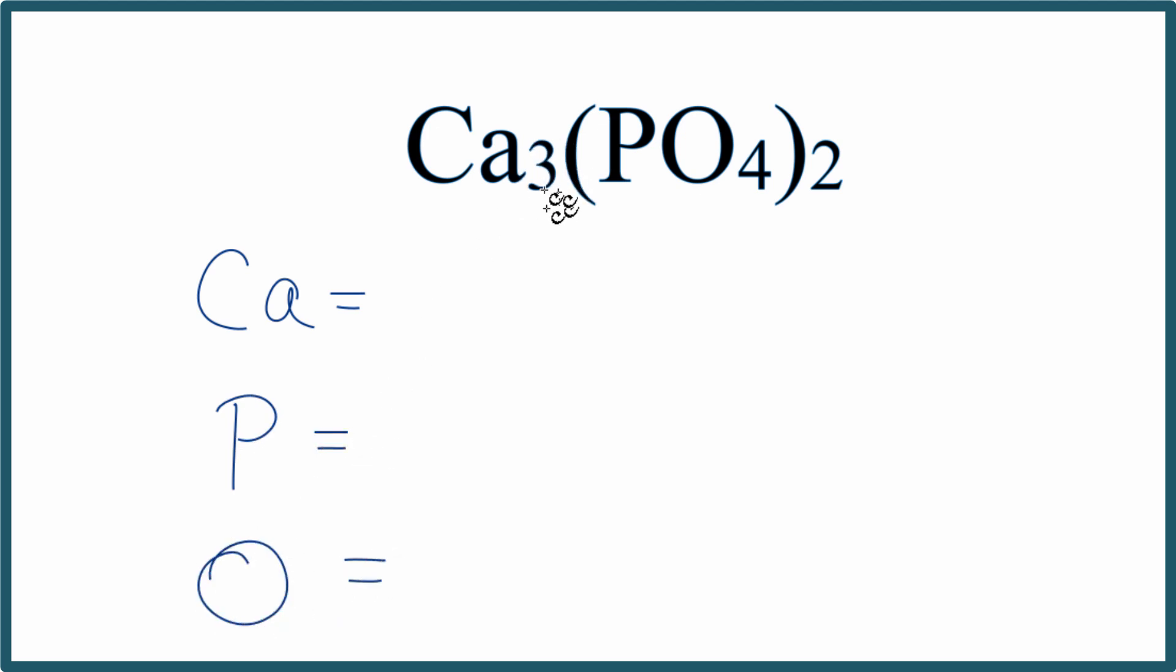For the calcium, there's a three as our subscript, so we have three calcium atoms. For the phosphorus and oxygen, those are in parentheses, so we have to be a little bit careful. When we have parentheses, this subscript out here, we multiply that by everything in the parentheses. The phosphorus doesn't have anything right now, we assume that to be one. So we have one times two, so we have two phosphorus atoms.